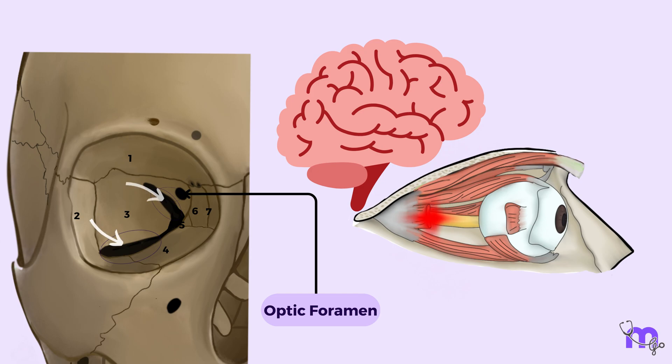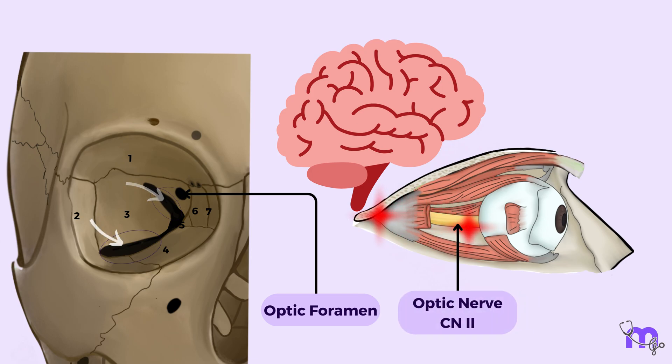The optic nerve — cranial nerve two — a conduit of visual information, finds its passage through these pathways.